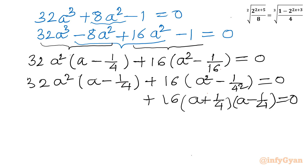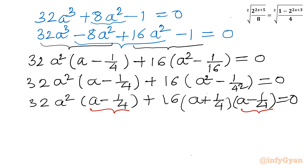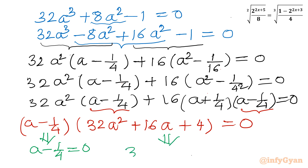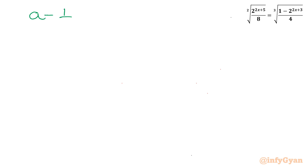So the expression becomes 16 plus 32a² times (a - 1/4). Taking (a - 1/4) as a common factor gives (a - 1/4) times (32a² + 16a + 4) = 0. So either a - 1/4 = 0, or 32a² + 16a + 4 = 0.